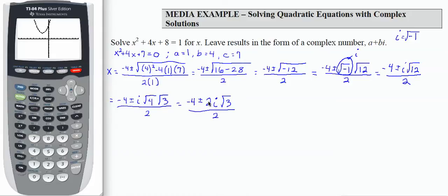Now I have a common factor of 2 in this term, in this term, and in the denominator. So I can remove a 2 from each term in the top, leaving me with negative 2 plus or minus i times the square root of 3. Now I can reduce.